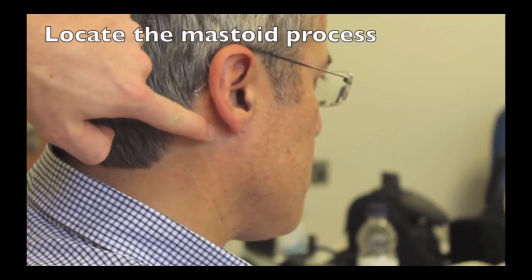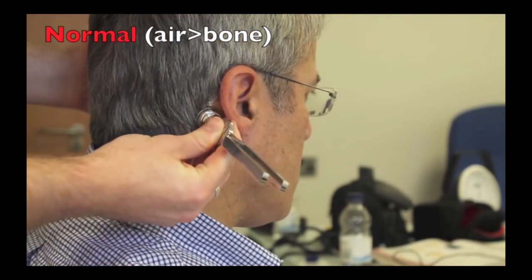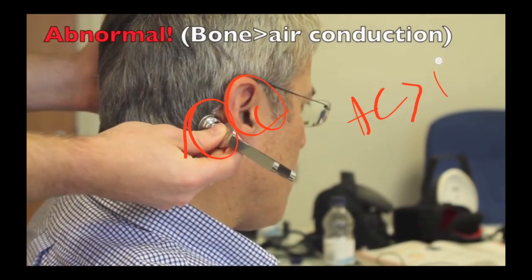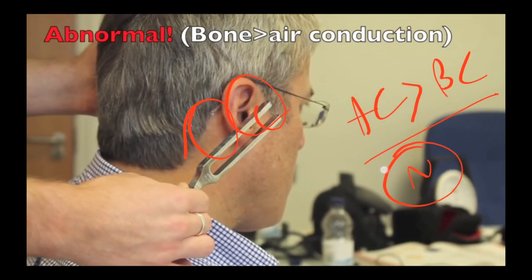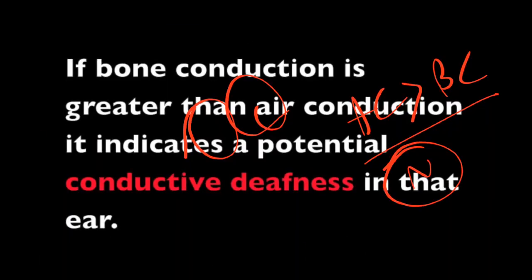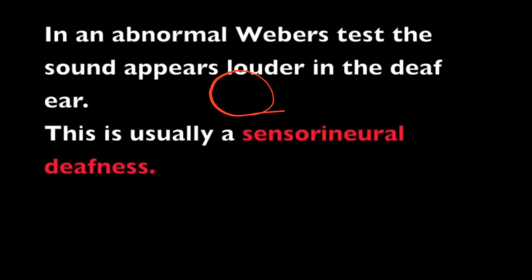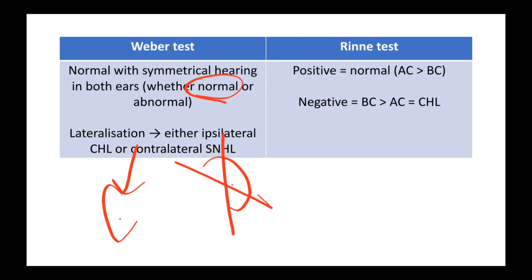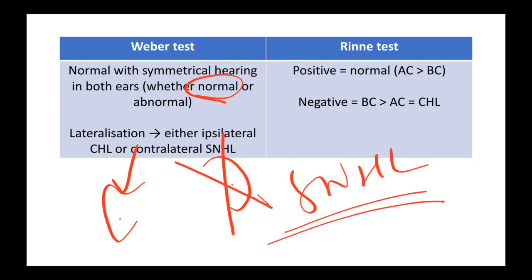In Rinne's test, the tuning fork is placed over the mastoid bone and then near the ear. If air conduction is greater than bone conduction, the patient has normal hearing. In Weber's test, the tuning fork is placed over the forehead to check which side the patient hears better. If he hears equally on both sides, that is normal; if he hears only on one side, the other side likely has sensorineural hearing loss. That is all about Weber's and Rinne's tests.